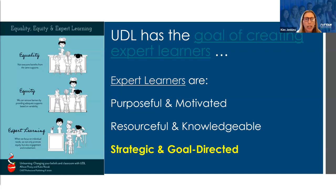This last characteristic — strategic and goal directed — aligns to the UDL principles of action and expression that we're going to be discussing today. The graphic on the left is taken from the book 'Unlearning: Changing Your Beliefs and Your Classroom UDL' by Alison Posey and Katie Novak. It illustrates what expert learning can look like. You will have access to these slides and can access this information by clicking on the link, which will take you to the Padlet.